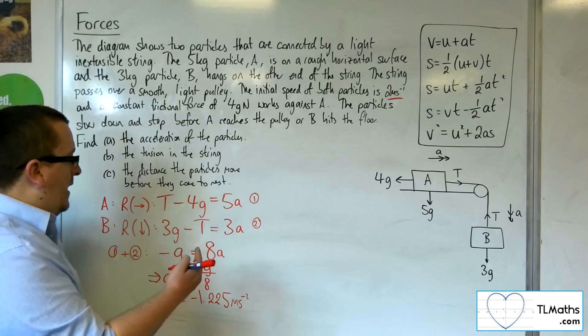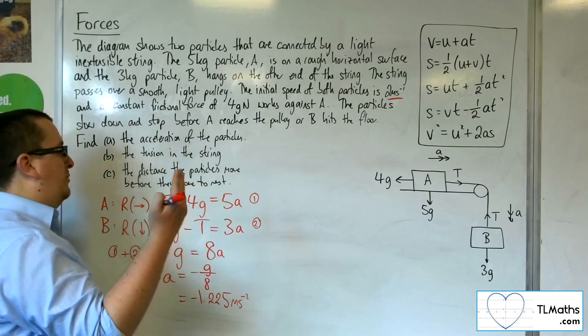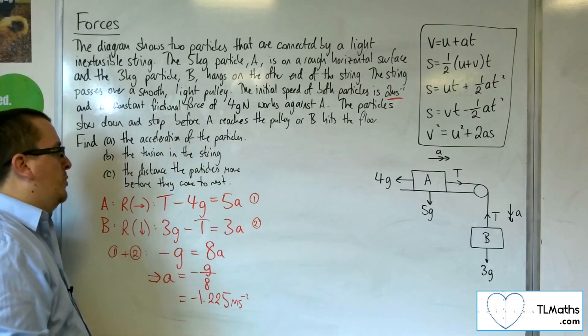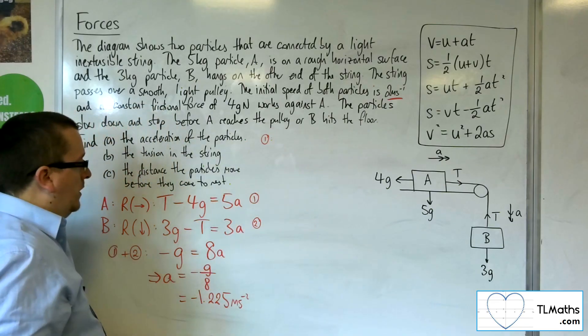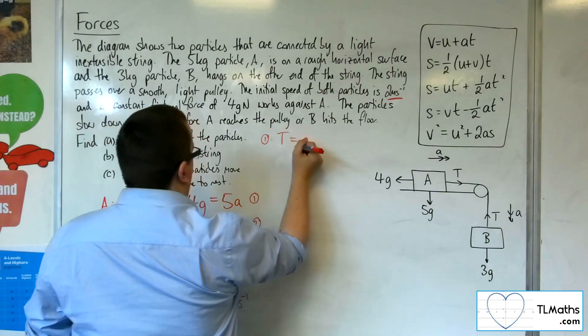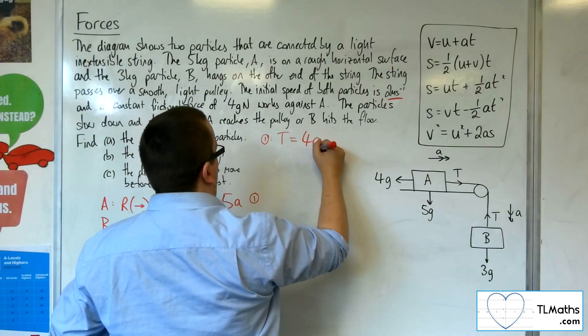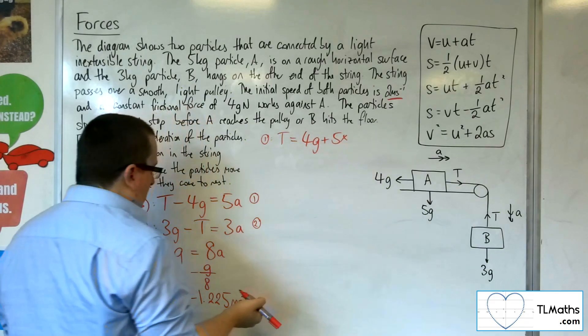Now, the tension in the string, I have that bit of information, which I can then substitute back into one of the two original equations. So if I substitute it back into number 1, the T, if we add the 4G to both sides, it's going to be 4G plus 5 lots of A, which was the minus 1.225.